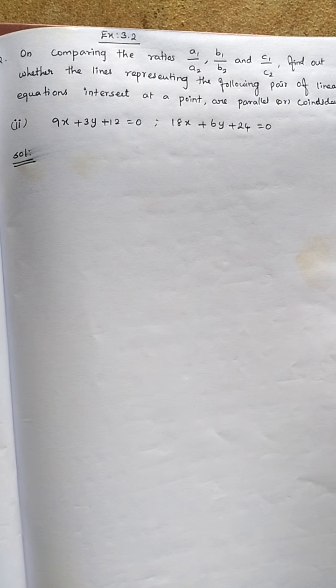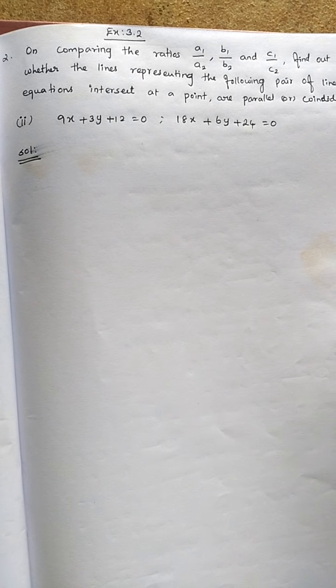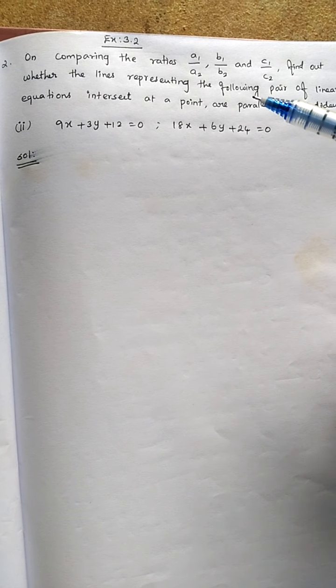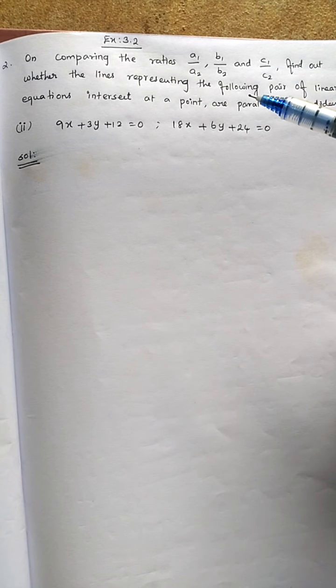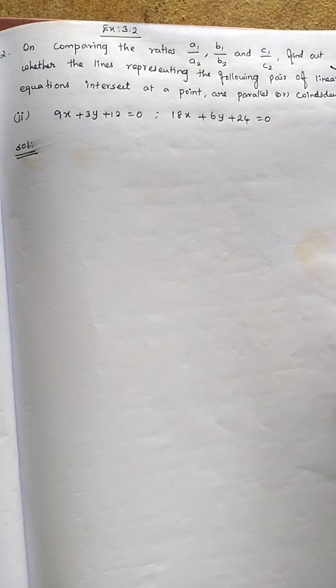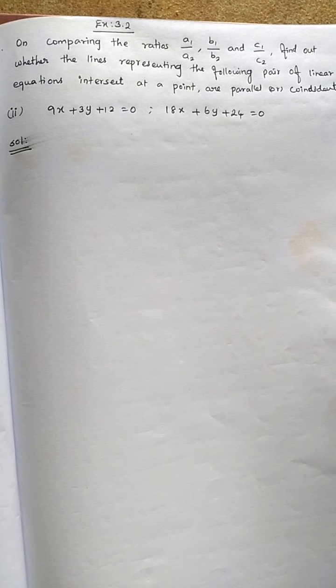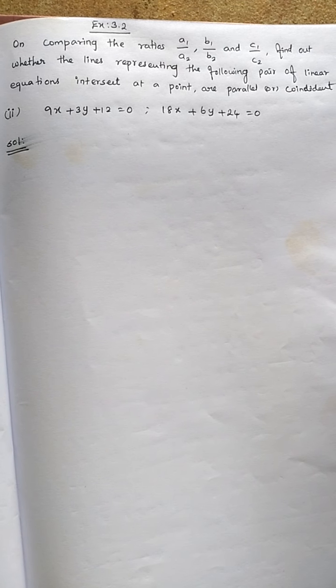Hello students, welcome back to Prakash CBSE. Here we have exercise 3.2, question number 2, on comparing the ratios a1 by a2, b1 by b2, and c1 by c2. Find out whether the lines representing the following pair of linear equations intersect at a point, are parallel, or coincident.